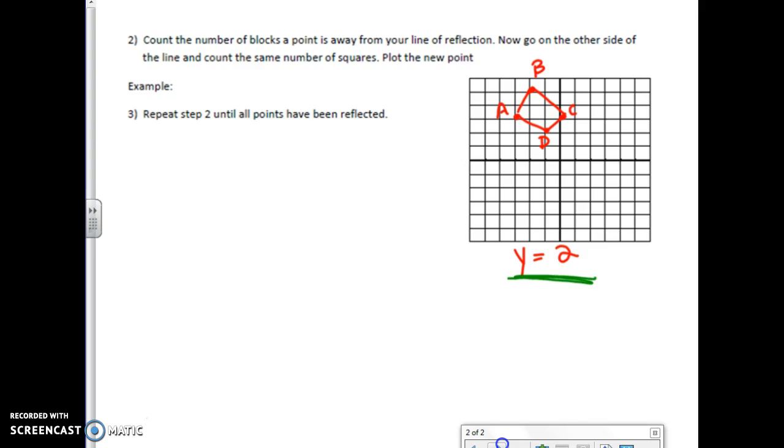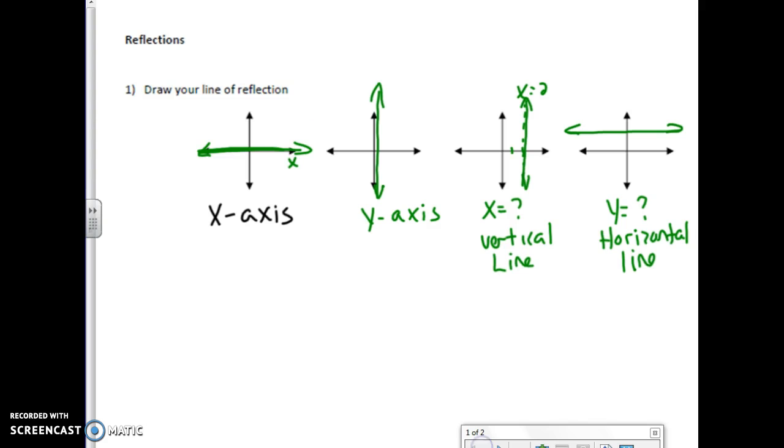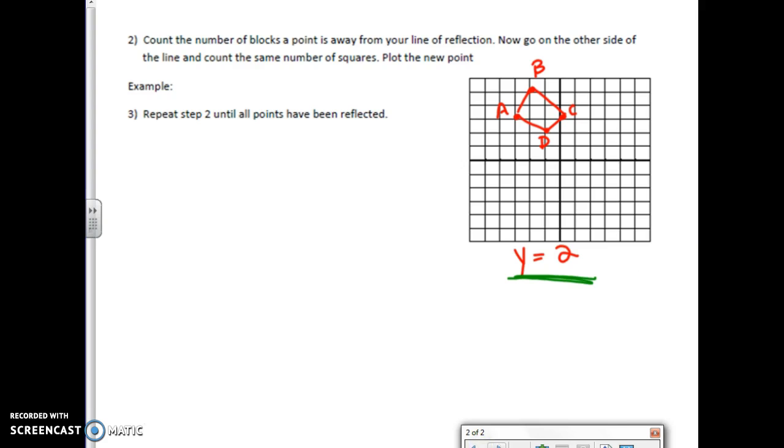So the first thing I'm going to do is draw the line, because that's what it says first. So I'm going to draw the line of reflection. Number one, draw the line of reflection. I'm going to draw the line of reflection where y equals 2. So this is 1, 2. It's a horizontal line where y equals 2.